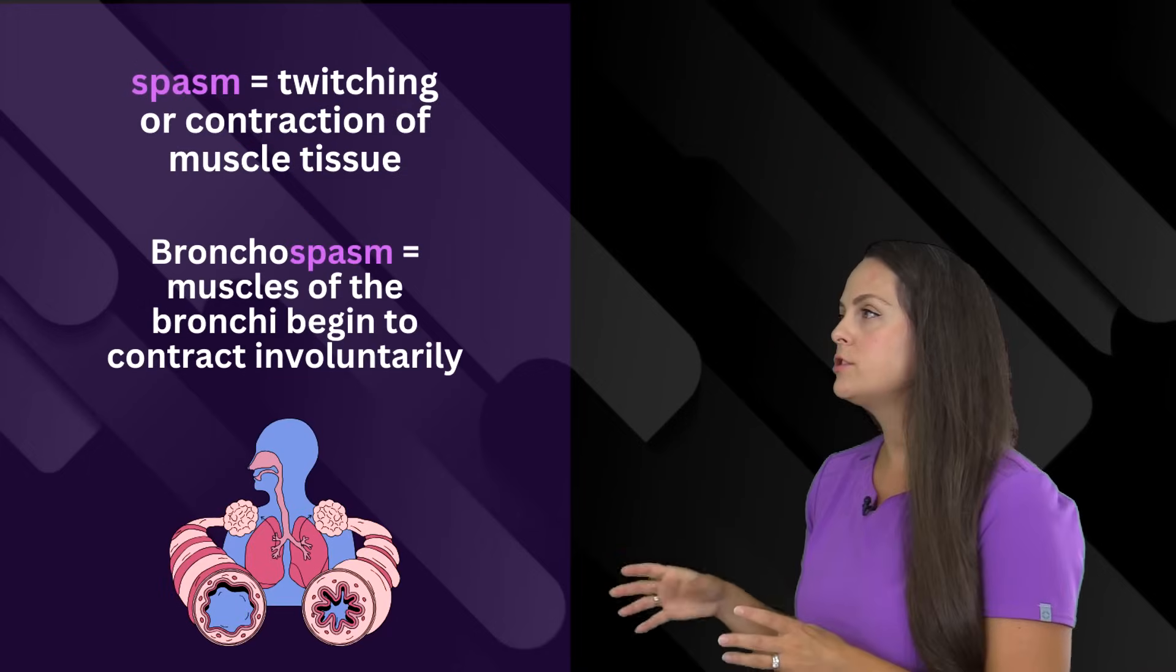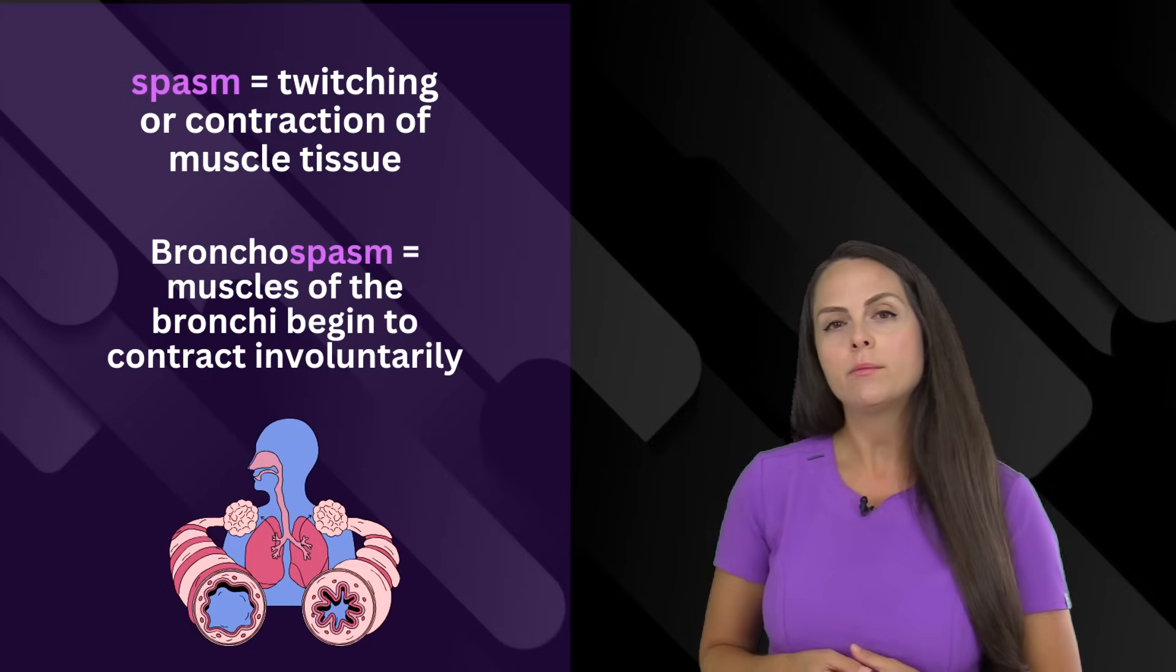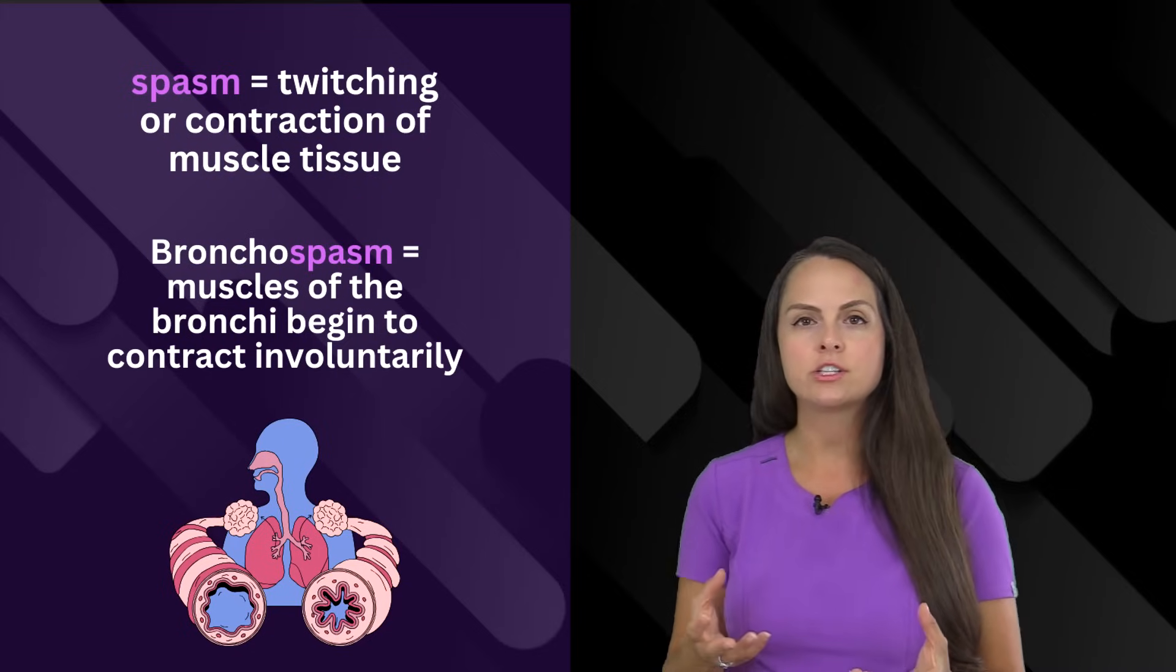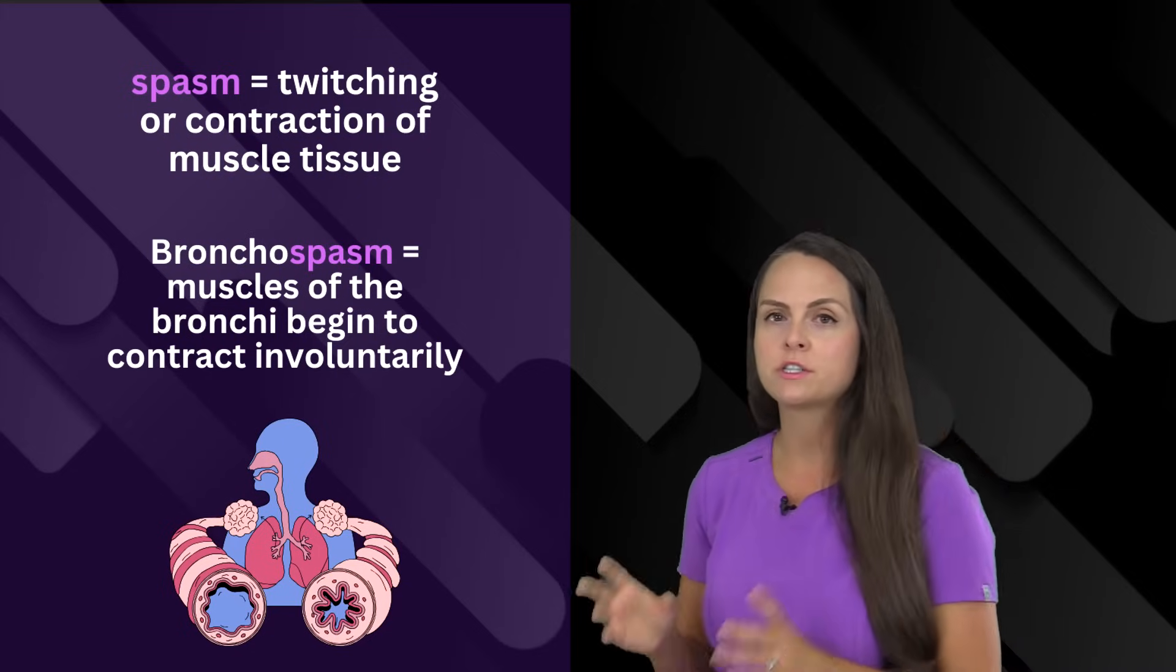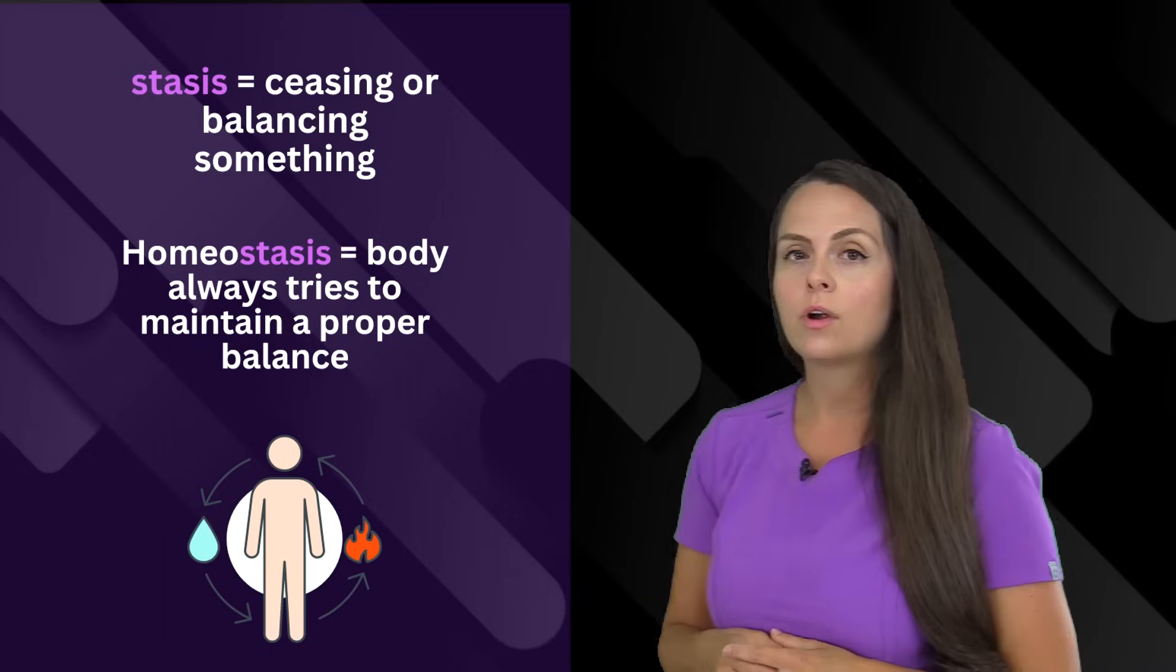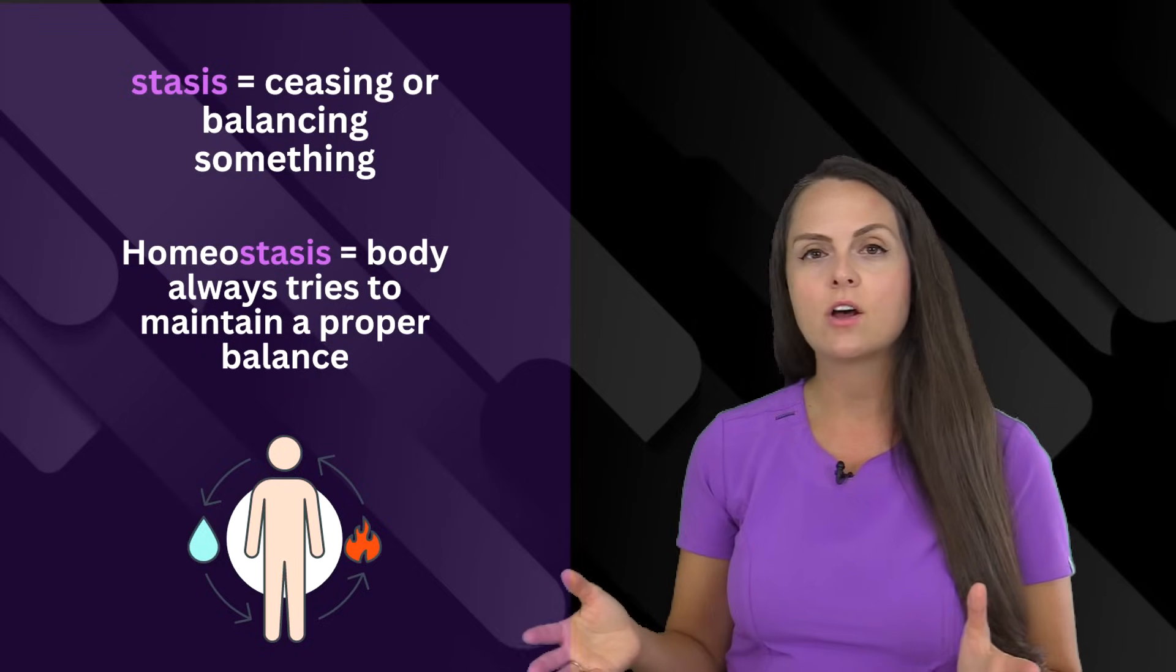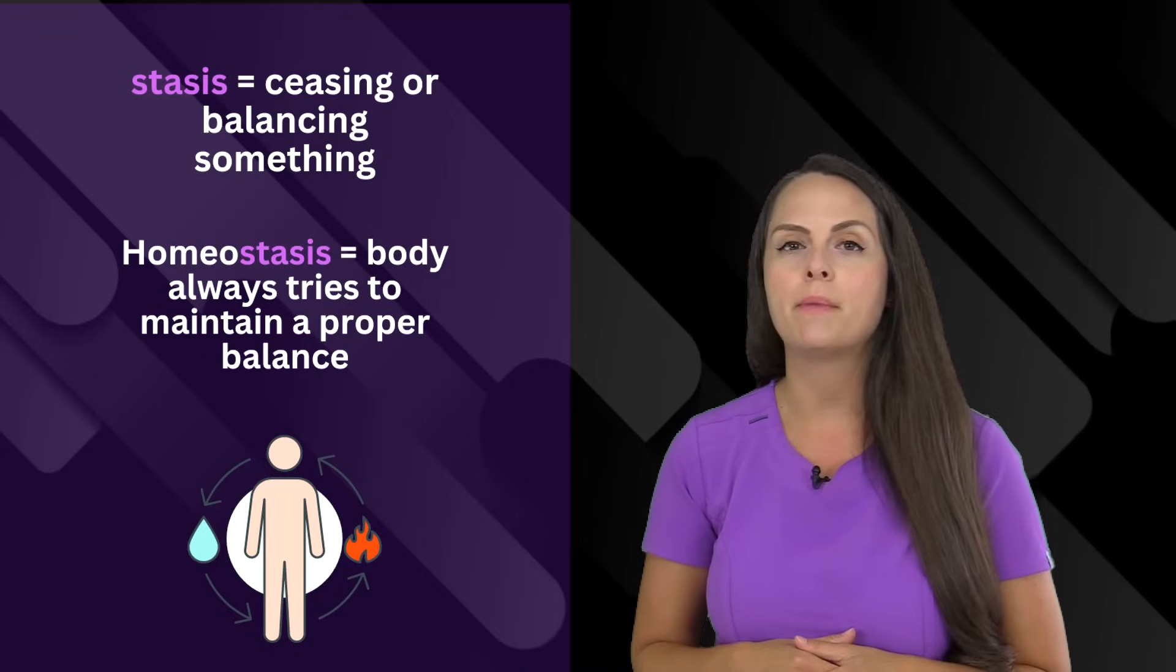Spasm refers to twitching or contractions of muscle tissue. Whenever a person is having contractions of their bronchi, we refer to this as a bronchospasm and this really impedes their breathing. Stasis means ceasing or balancing of something. Our body is always trying to maintain homeostasis where it wants a proper balance.